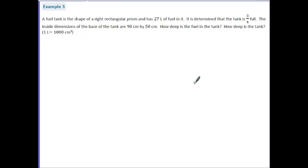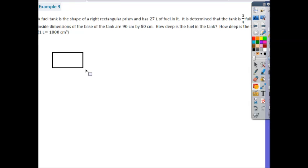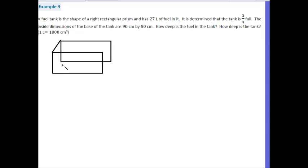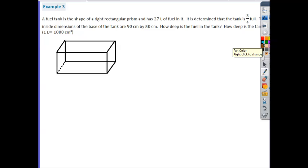Finally, let's look at Example 3. A fuel tank is in the shape of a right rectangular prism and has 27 liters of fuel in it. The tank is three quarters full. The inside dimensions of the base of the tank are 90 cm by 50 cm. How deep is the fuel in the tank, and how deep is the tank? We're told that 1 liter equals 1,000 centimeters cubed, which is very helpful since we have two different units. Let's draw a figure to visualize what this tank looks like, noting that it is three quarters full.